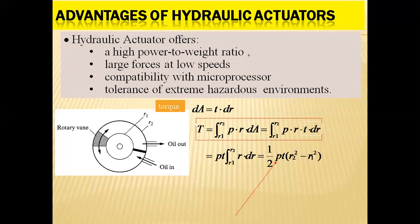The advantages of hydraulic actuators include: a high power-to-weight ratio, large forces at low speeds, compatibility with microprocessors, and close tolerances — even slight variations can be monitored. In pneumatic systems, by contrast, the movement is very fast and random, making it very hard to cope with tight tolerances.